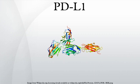Programmed death ligand 1, also known as Cluster of Differentiation 274 or B7 homologue 1, is a protein that in humans is encoded by the CD274 gene. It is a 40 kDa type 1 transmembrane protein speculated to play a major role in suppressing the immune system during particular events such as pregnancy, tissue allografts, autoimmune disease, and other disease states such as hepatitis.